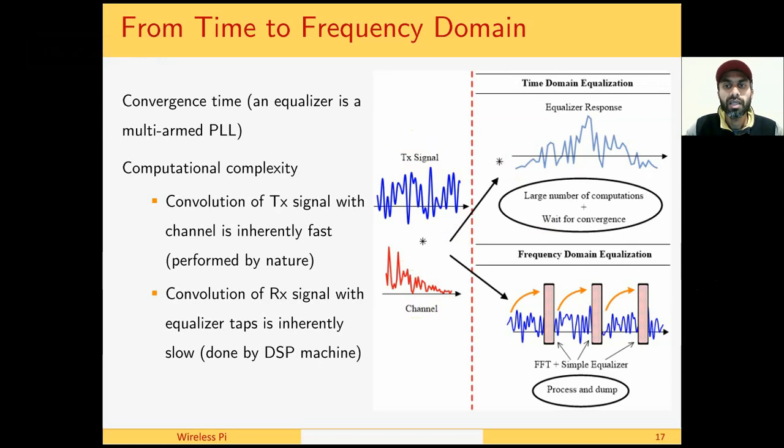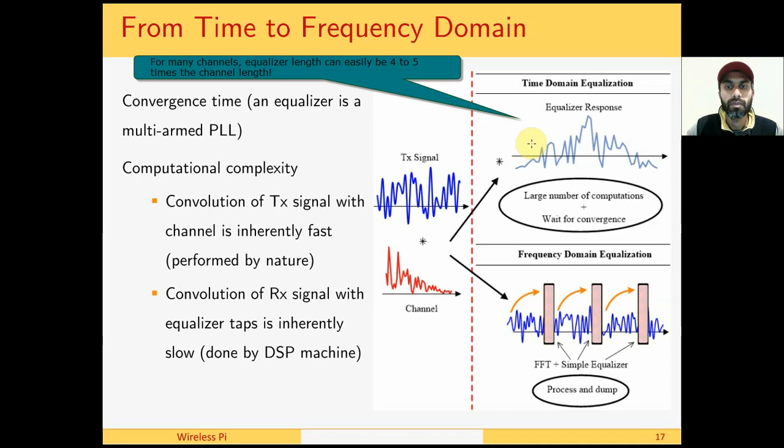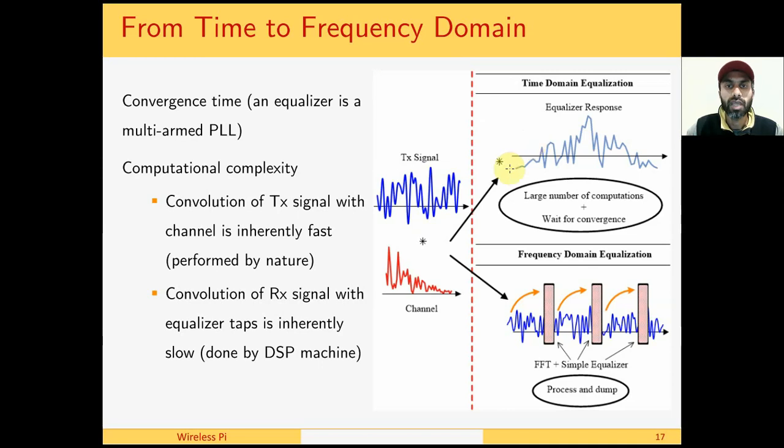It has been known that an equalizer response is significantly longer than the channel impulse response. Therefore, a time domain equalizer implements a large number of computations and we have to wait for the convergence of the equalizer tabs.